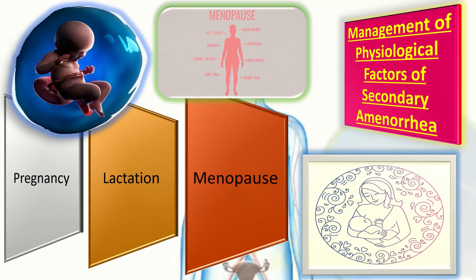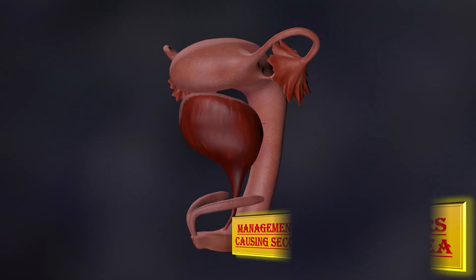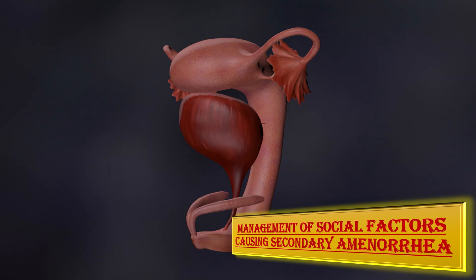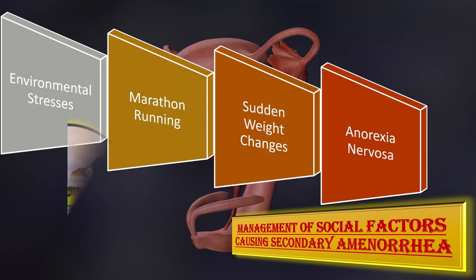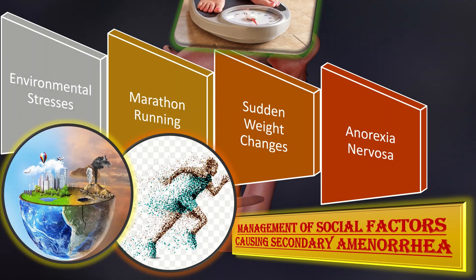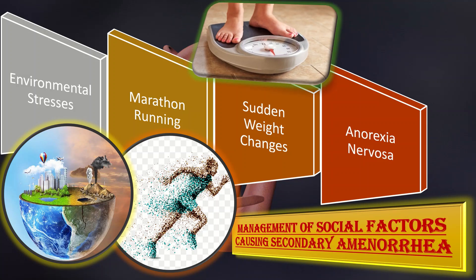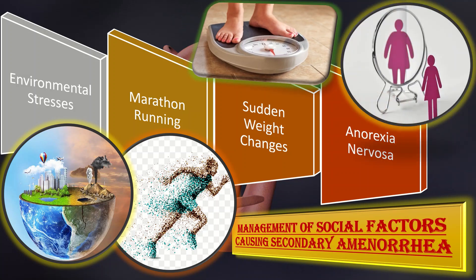Let us discuss the management of social factors. As far as the management of social factors like environmental stresses, marathon running, sudden weight changes such as weight loss and weight gain, and anorexia nervosa are concerned, there is no specific management for these factors. However, dietary modification and lifestyle changes can solve the problem to a large extent, along with proper patient counseling.